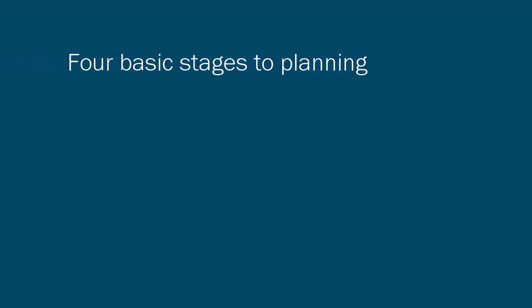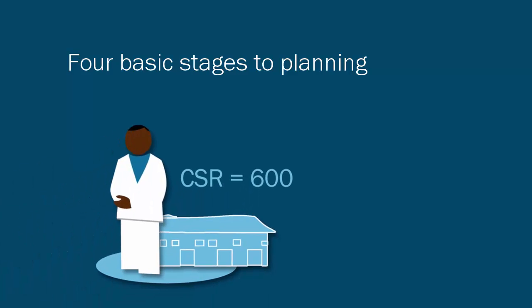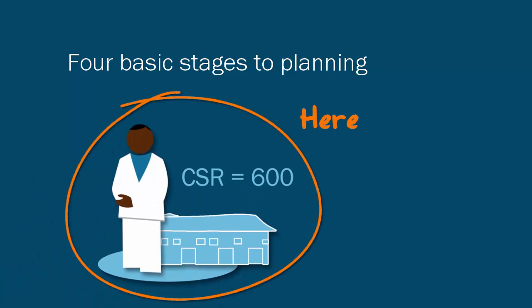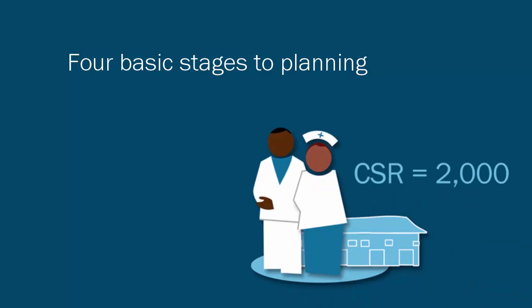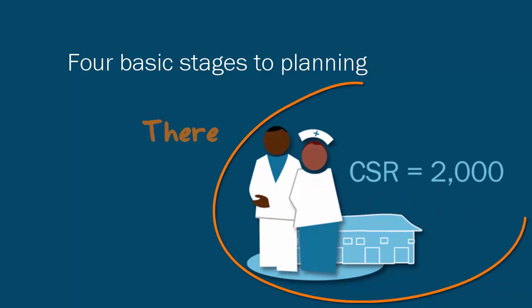There are four basic stages to planning. Firstly, we need to understand where we are now — here. To do this we establish our present position, and this lets us decide if change is required or even possible. The second stage is to identify where we want to get to in the future — there. This future is usually three to five years away.